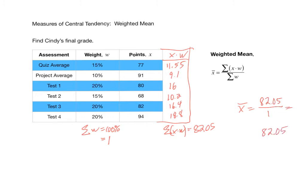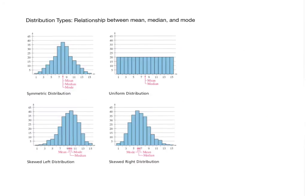Cindy got a B as her final grade. So you should be able to compute the mean, median, and mode from raw data, compute an approximation of the mean from a frequency distribution table, and also find a weighted mean.